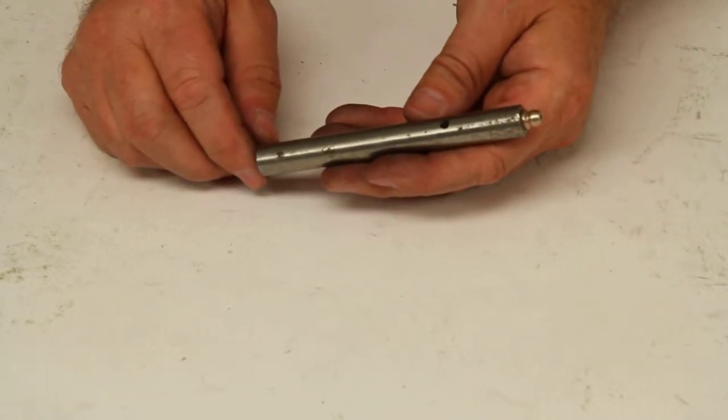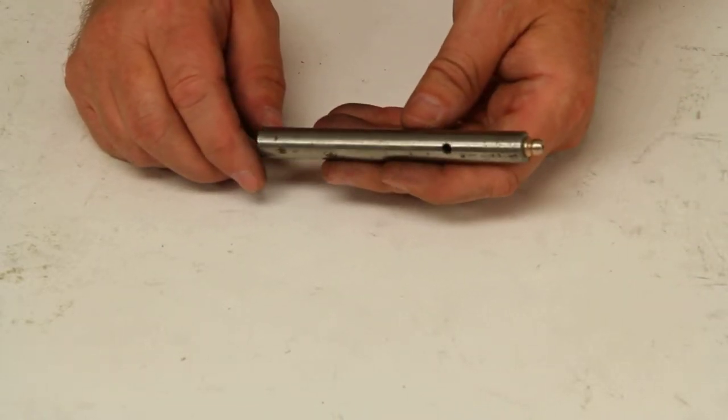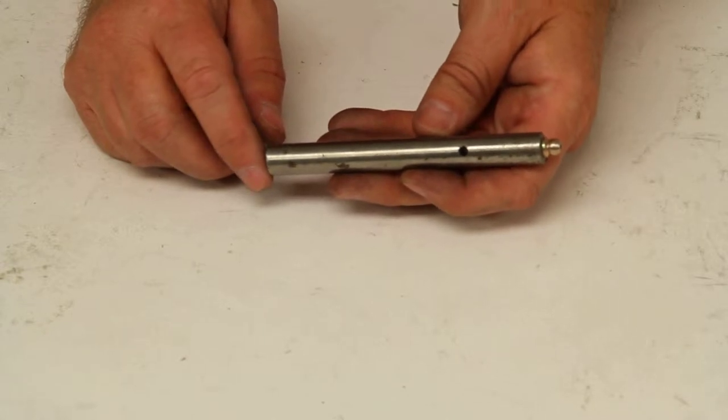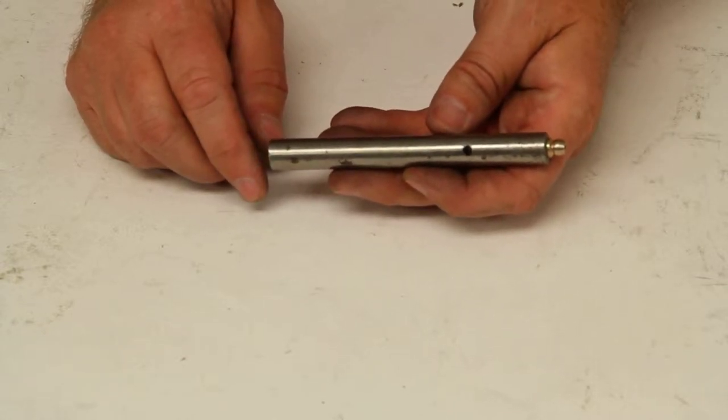Today we're going to review part number HP412G. This is the Redline 1/2-inch diameter greasable hinge pin.